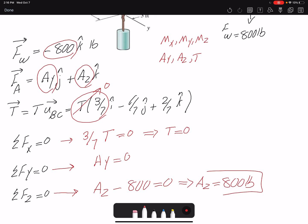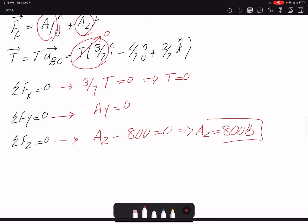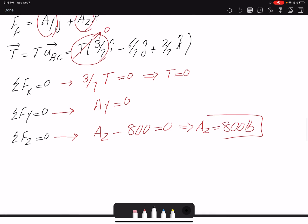So I had three equations. I found my three unknowns, but I have six unknowns. So I need to write summation of moment.